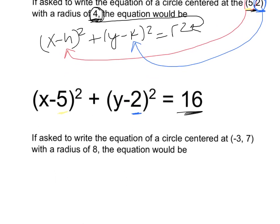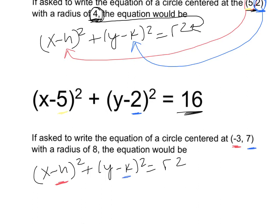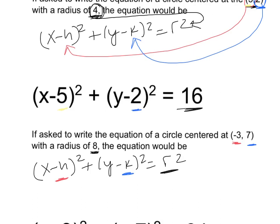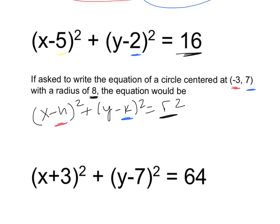If asked to write the equation of a circle centered at (−3, 7) with a radius of 8, always write the equation first: x minus h squared plus y minus k squared equals r squared. Negative 3 goes in the h spot, positive 7 in the k spot, and 8 in the r spot. The result is x plus 3 quantity squared plus y minus 7 squared equals 64.